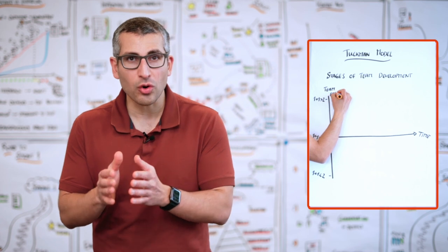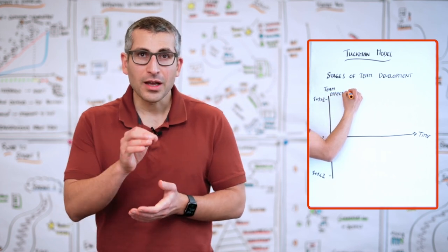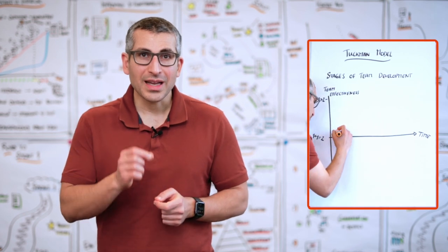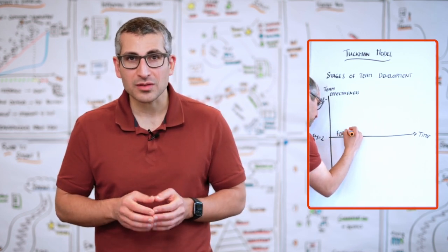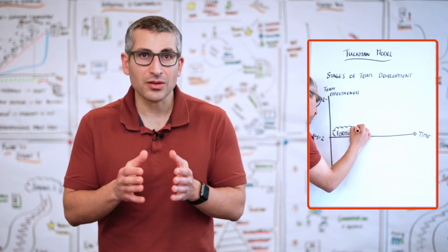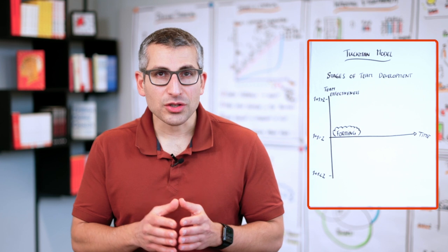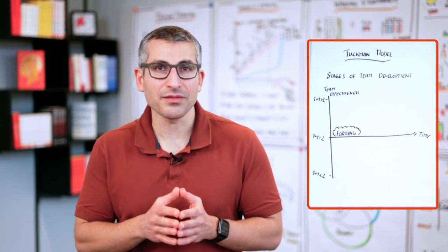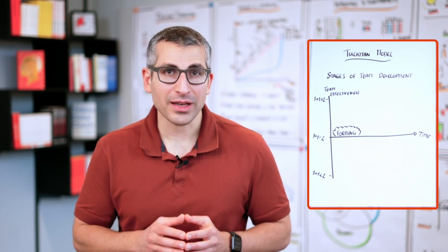Forming, storming, norming and performing. Forming is the stage when a team gets initially assembled. In that stage, there are no true synergies. There's also very little friction. So we draw them right on the baseline. In that stage, you usually observe almost every team member doing tasks individually. Very little collaboration taking place.